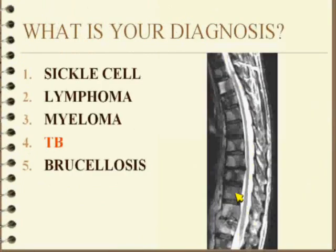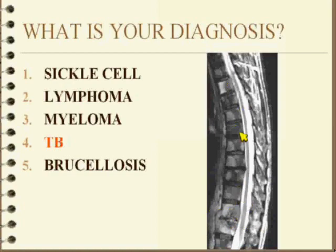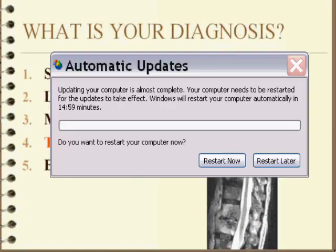The answer is TB. The key feature here is that you have something that is involving multiple bodies. And really, I think the discriminator is this level, which if you took this level by itself, you might call this a pyogenic disc space infection. But yet you have one level that looks like a pyogenic infection, and the other levels that look more like metastatic disease — looks very aggressive. So what can give that?